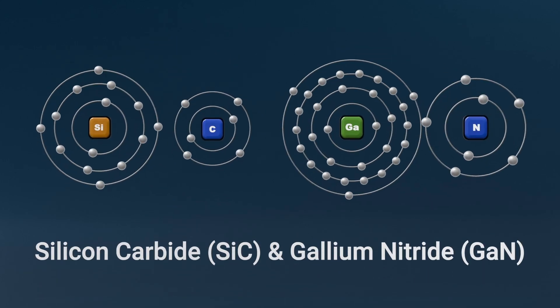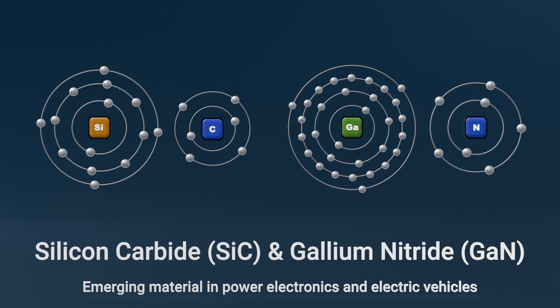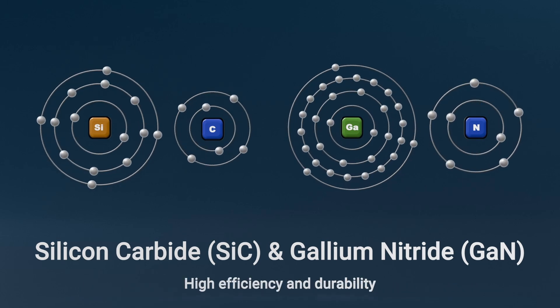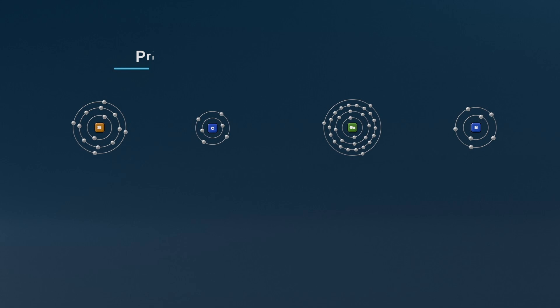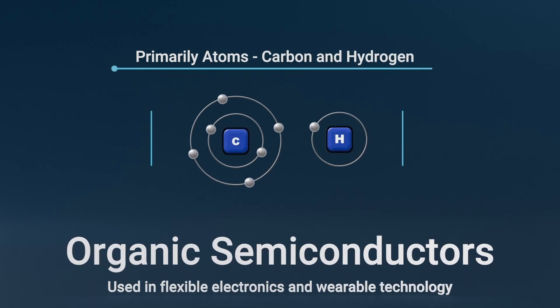Silicon carbide and gallium nitride are emerging materials in power electronics and electric vehicles, due to their high efficiency and durability. Organic semiconductors are used in flexible electronics and wearable technology.